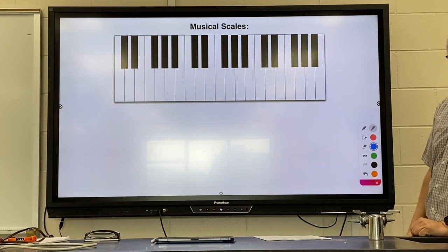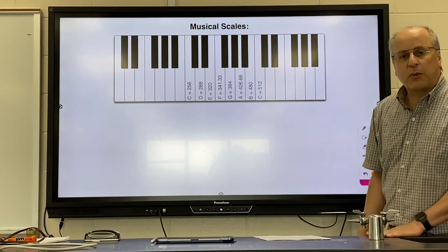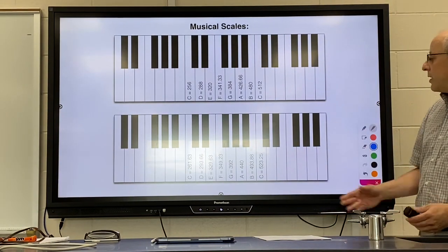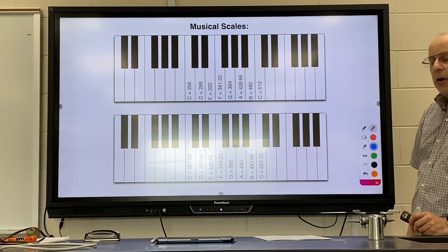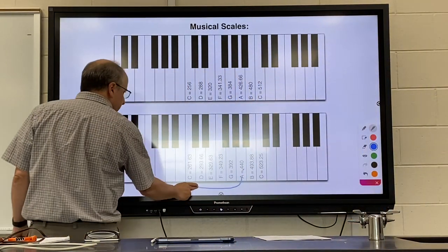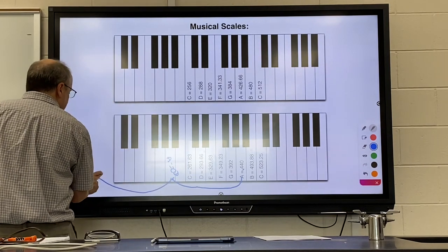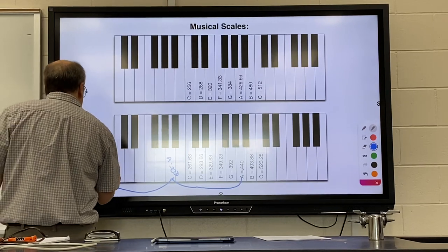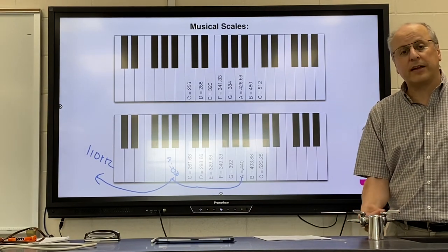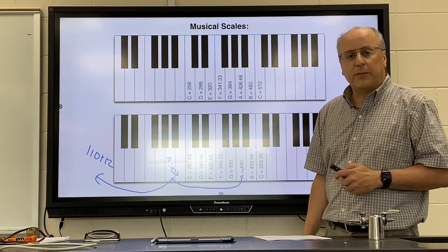Next we want to see where that note falls on our musical scale. This is the scientific scale, but we want to use the scale based on A440. We won't get anything that lies on this part of the piano — the frequency is much lower. Going down one octave from A gives us A at 220 Hz. Going down one more octave gives us 110 Hz, and that is the frequency you should have calculated for that guitar string. So that string should be an A two octaves below middle C.